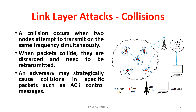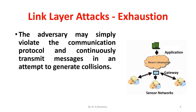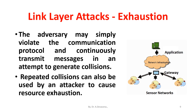A possible result of such collisions is exponential back-off. The next link layer attack is exhaustion. The adversary may simply violate the communication protocol and continuously transmit messages in an attempt to generate collisions. Repeated collisions can also be used by an attacker to cause resource exhaustion. For example, a naive link layer implementation may continuously attempt to retransmit corrupted packets.